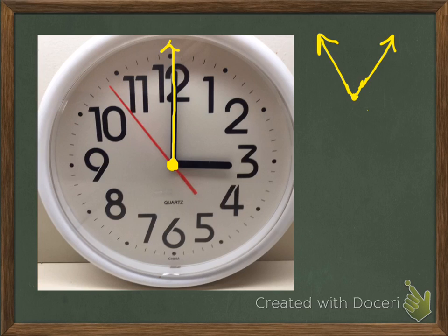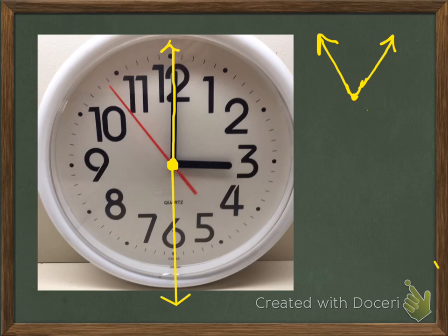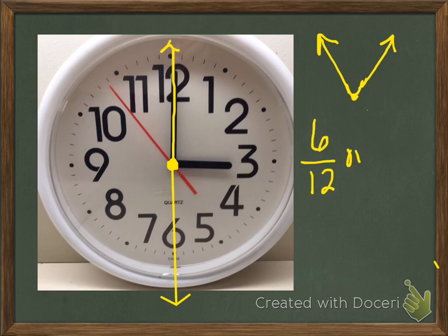What happens now if I draw my ray from the center point down through the number 6? There we go. How much of my circle — how much of my clock face — moving in a clockwise motion, using a fraction, has been the movement around the clock face? Six twelfths, or one half.